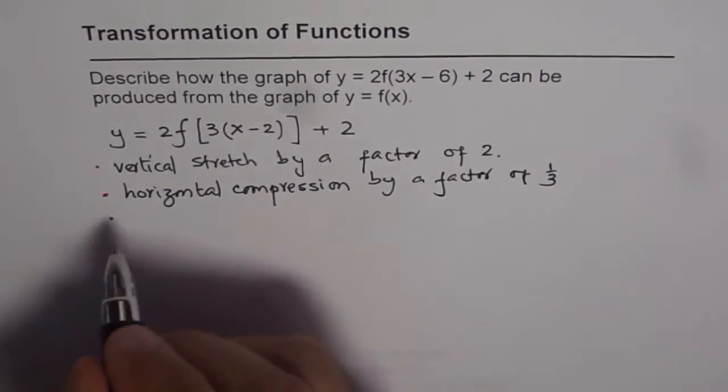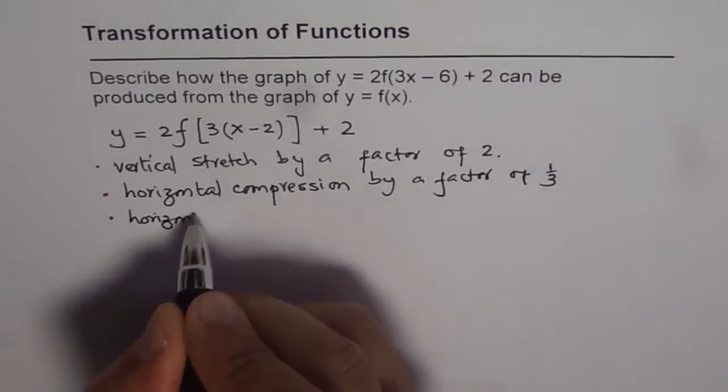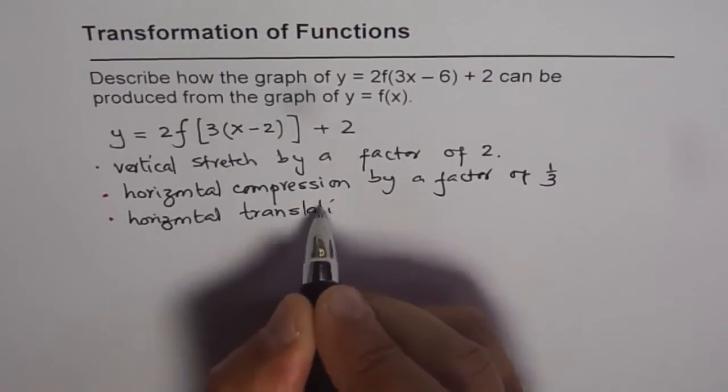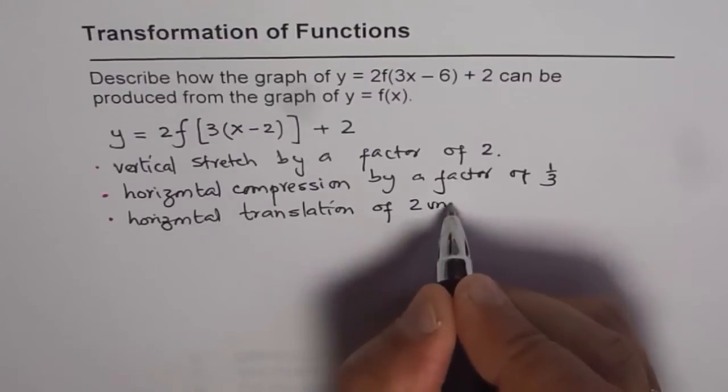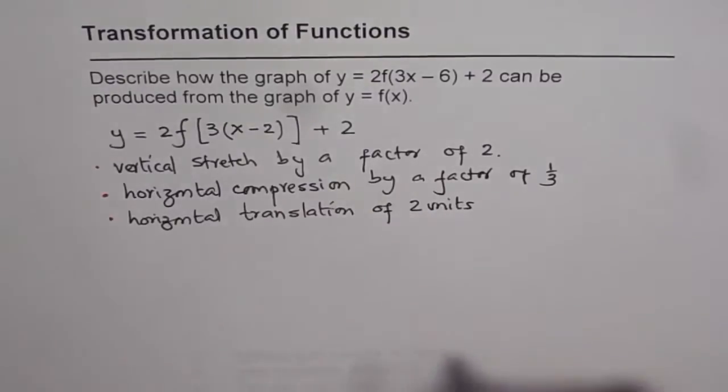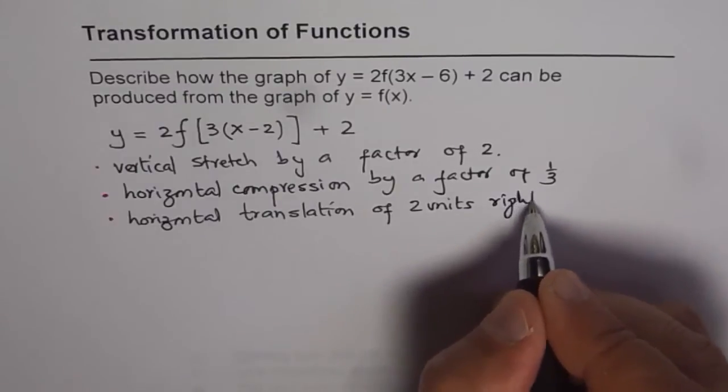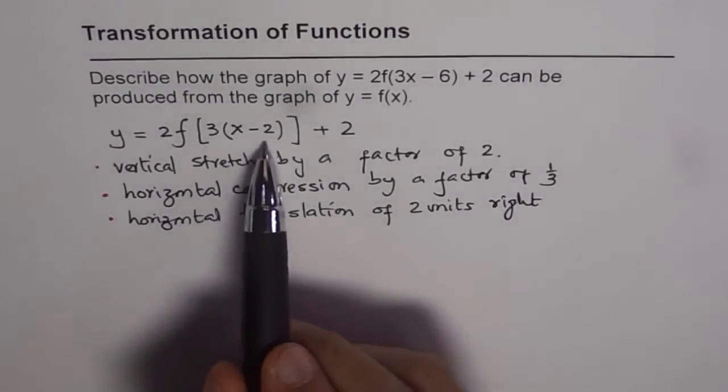x minus 2 really means horizontal translation of 2 units. Which direction? Left or right? Right, it is right. How do we get that? Basically, you need to equate that to 0.